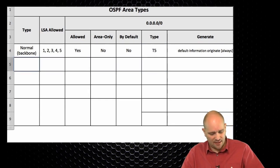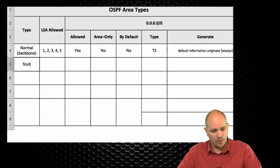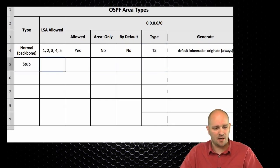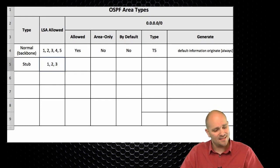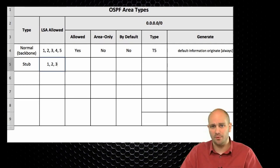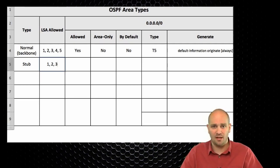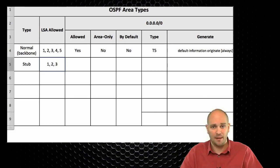The next area type is the stub area. In stub areas, LSA types 1, 2, and 3 are allowed. Stub areas do not allow external routes, so type 5 and type 7 are not allowed. Type 4 would be pointless without type 5, so it is not allowed either.